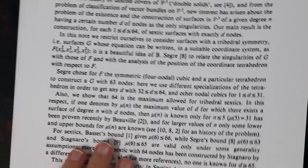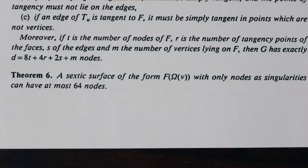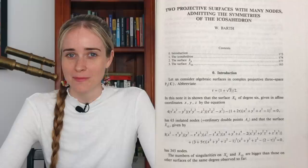They both went through a thorough review process for the reputable journals they were published in. The older paper claims that the maximum number of singularities for a sextic is 52. While the other one claims it is 64. Yet, they are both wrong.